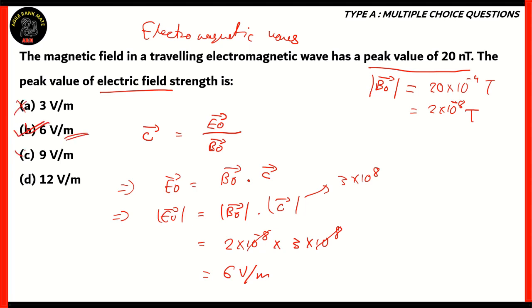All the other options are incorrect because the numerical value is different from what we've calculated. In order to calculate the electric field strength when you have the magnetic field strength given, you just have to multiply the magnetic field with the speed of light and you will get the electric field strength. Option B is the correct option.